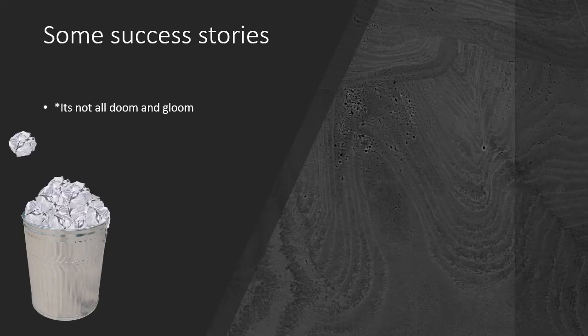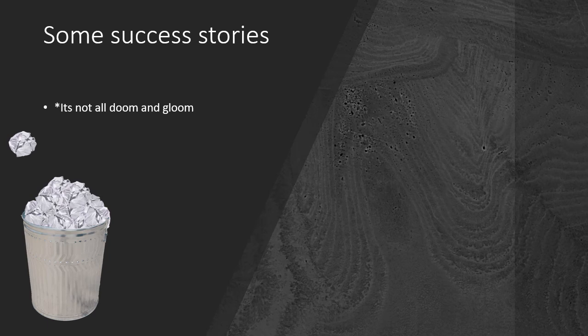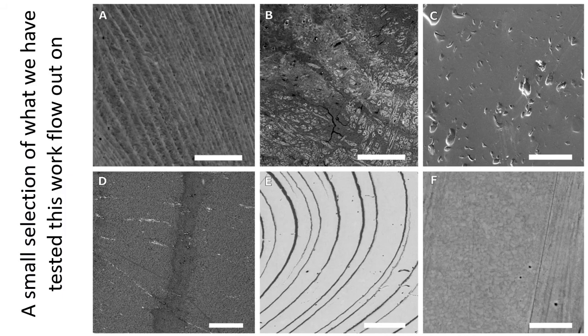This is the final just to show that there are some success stories and it's not all doom and gloom and broken fossils. Here are some of our examples. A is the growth layers within a conodont. B is some dentine tubules within a scale. C is Durango apatite which is an abiotic crystal. D is dentine within a spinosaur tooth. E are the growth layers within a barnacle and F is maybe some crystals within a different barnacle.